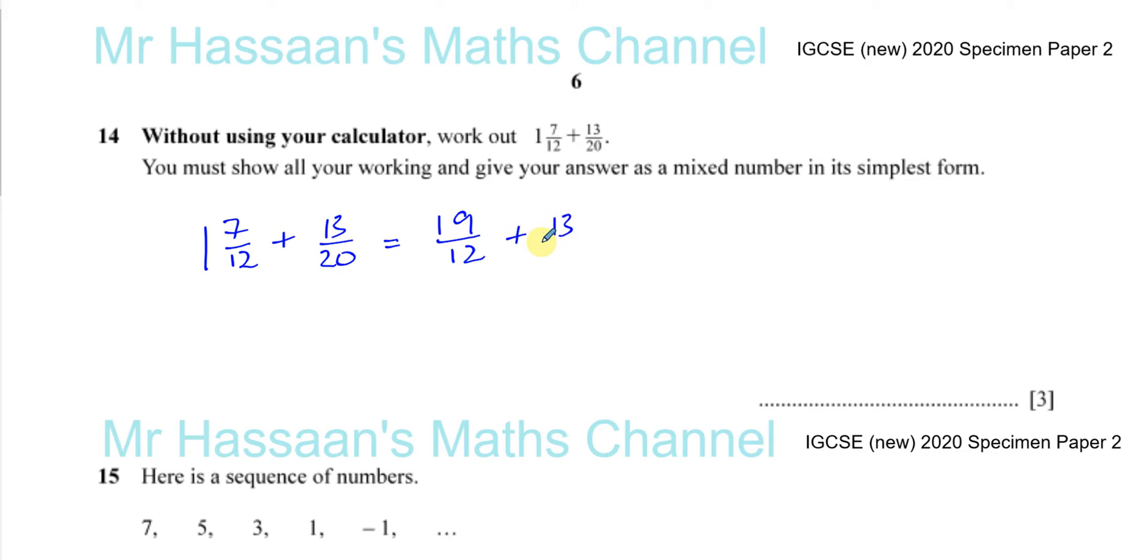Now we cannot add these fractions together unless we make them have the same denominators. Some students will just multiply 12 by 20 to find a number that they both go into, but that's going to be a lot of hassle, especially when you're not using your calculator. It's much easier to think about what number does 12 go into and 20 also go into.